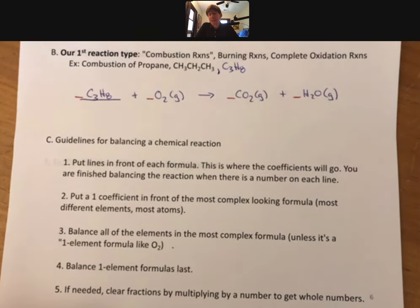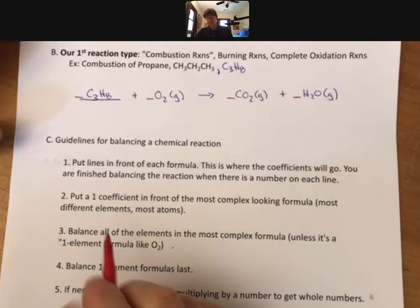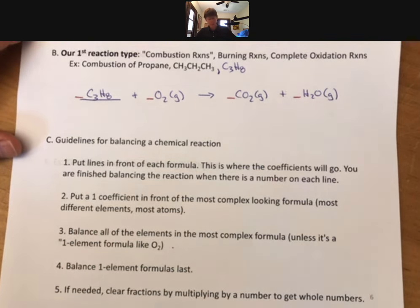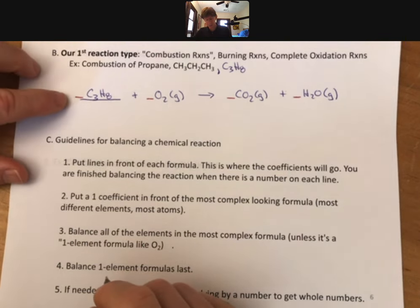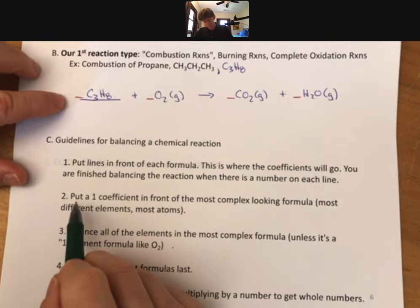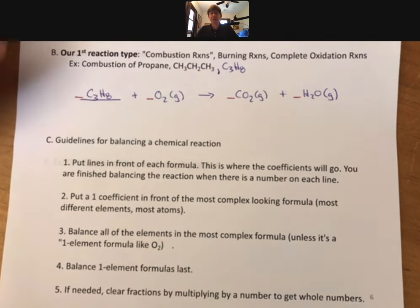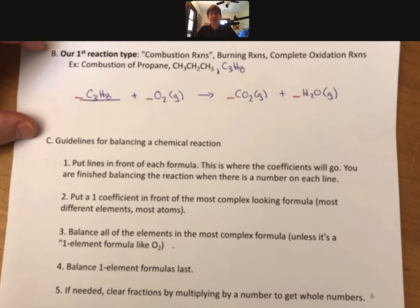I'm showing you my process. Your process doesn't have to be like this. Just make sure that your process gets you the right answer. Now let's go to green and it says put a one coefficient in front of the most complex looking formula, most different elements and the most different atoms, or the most atoms.